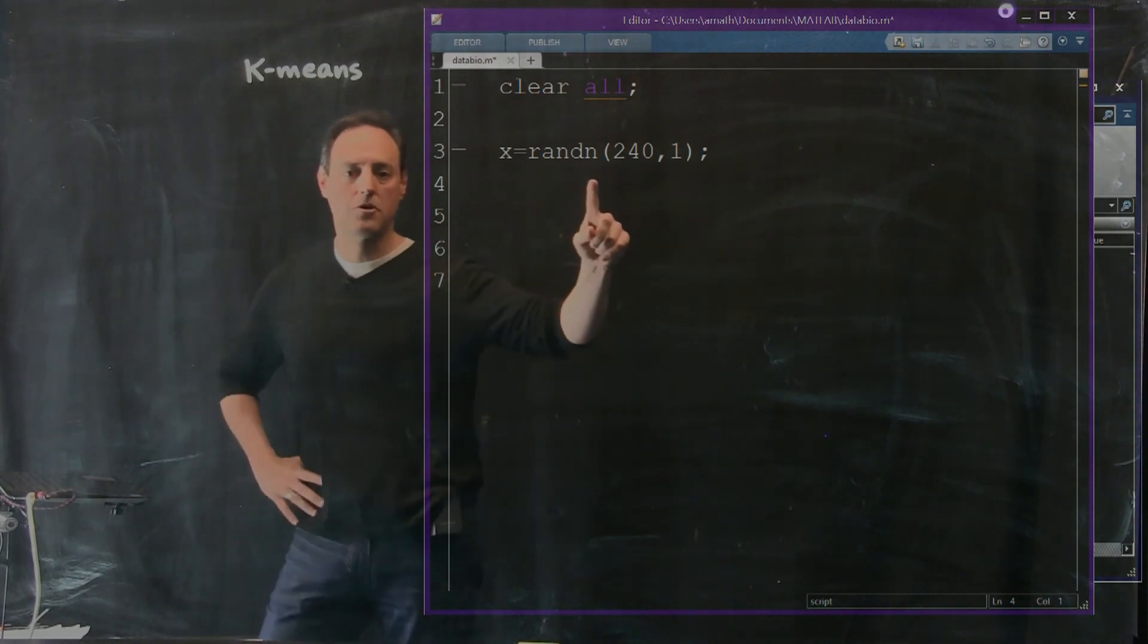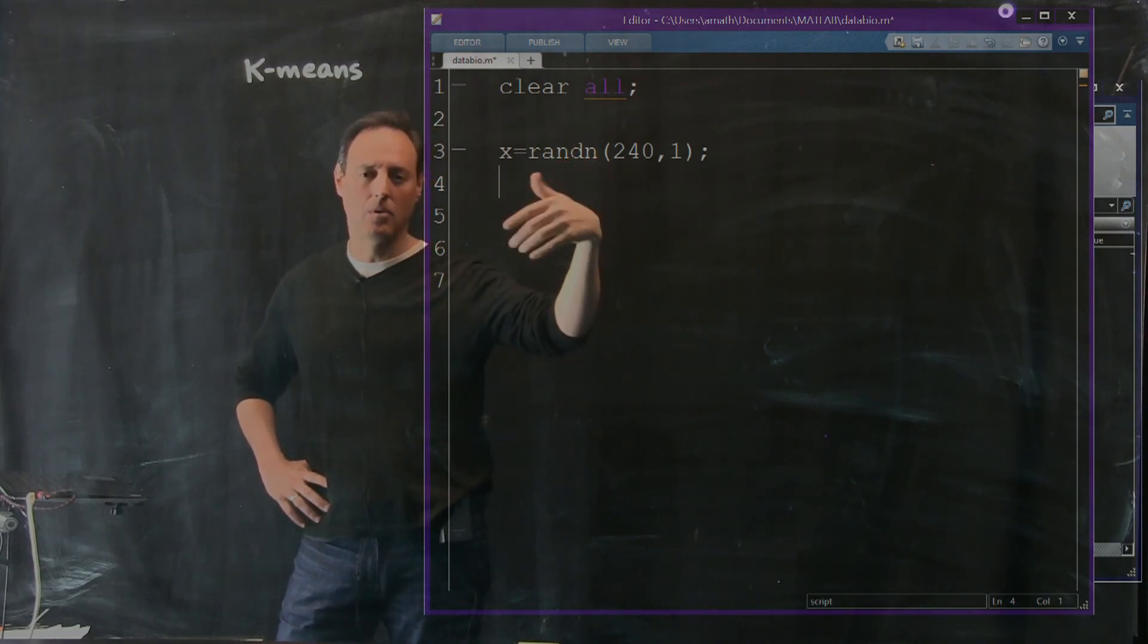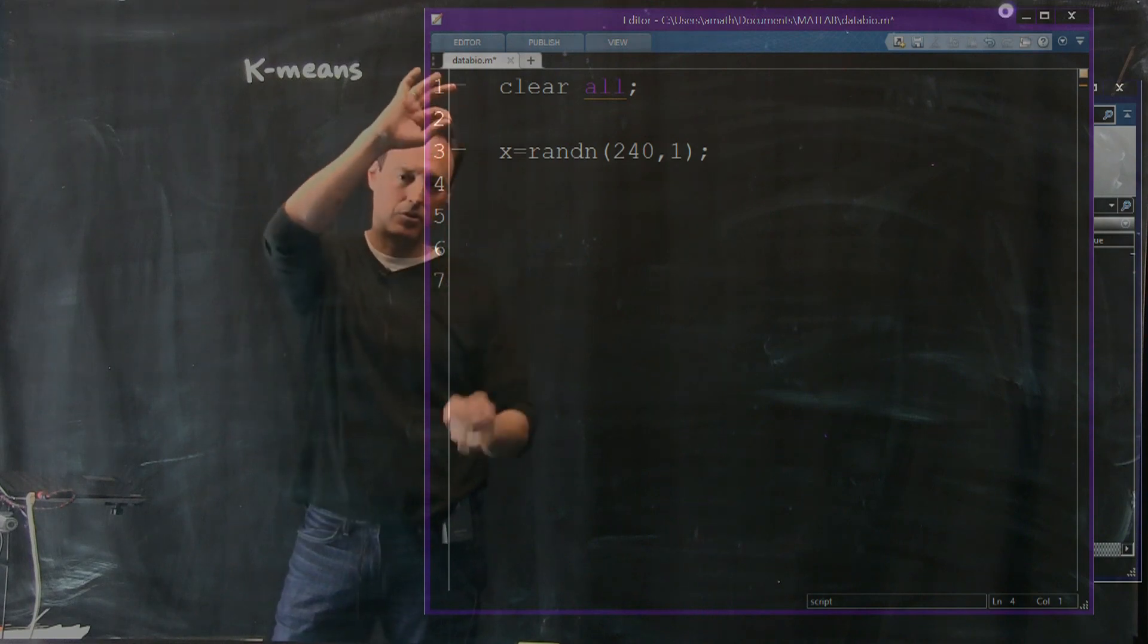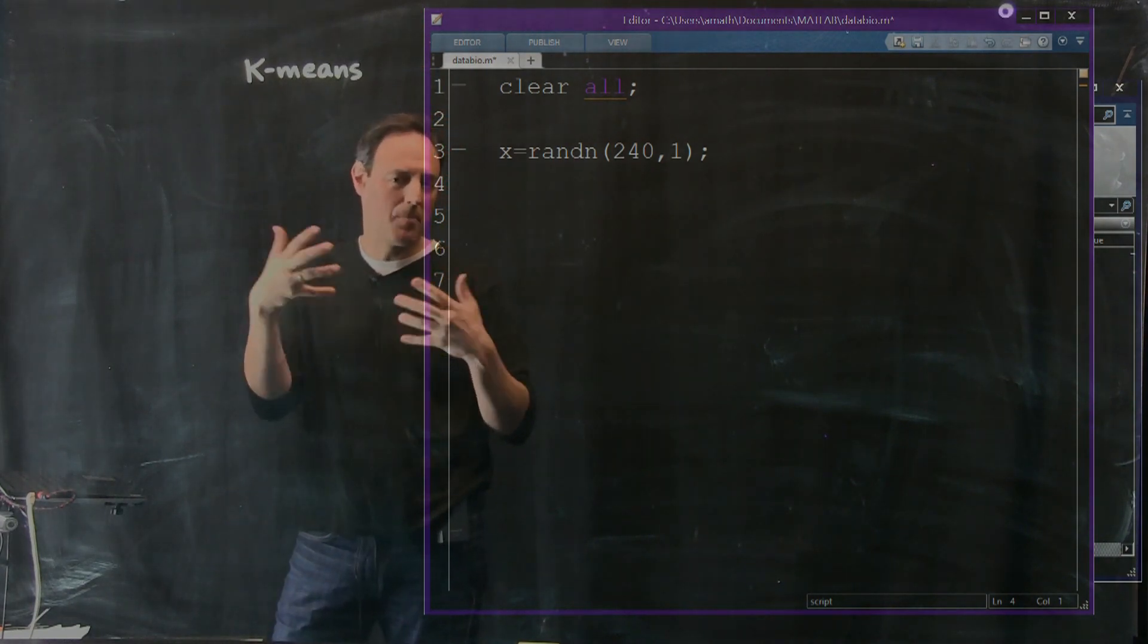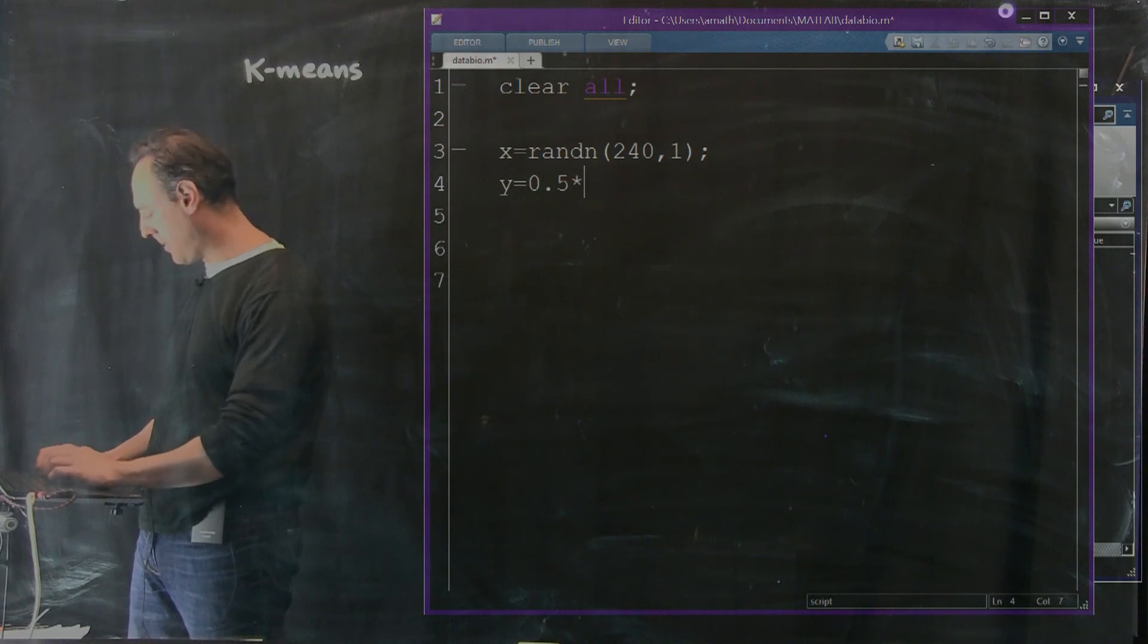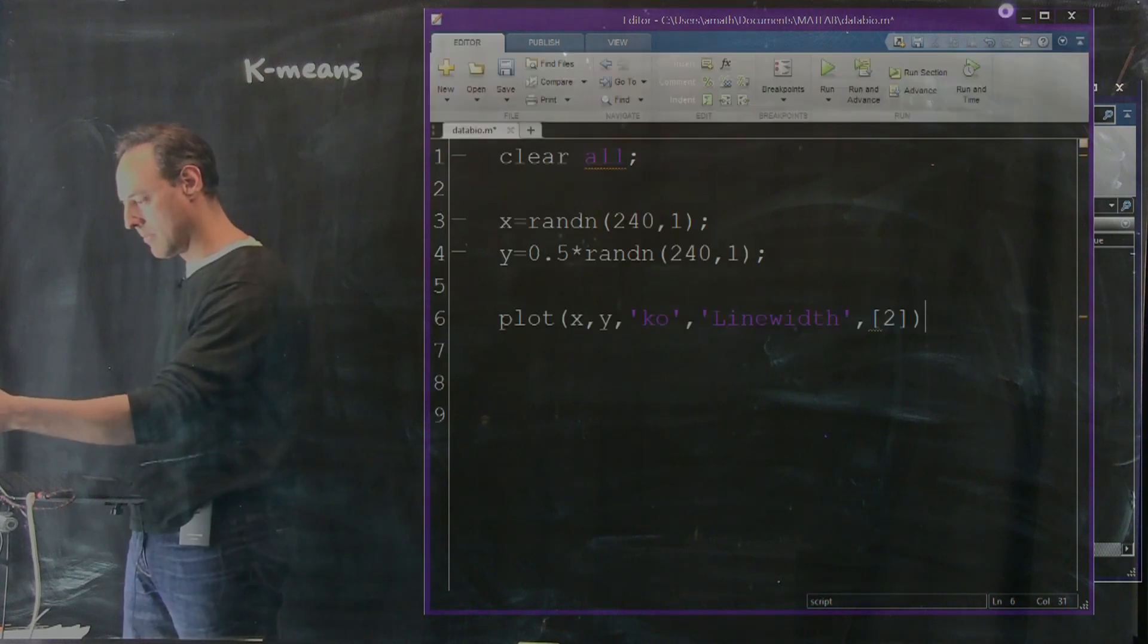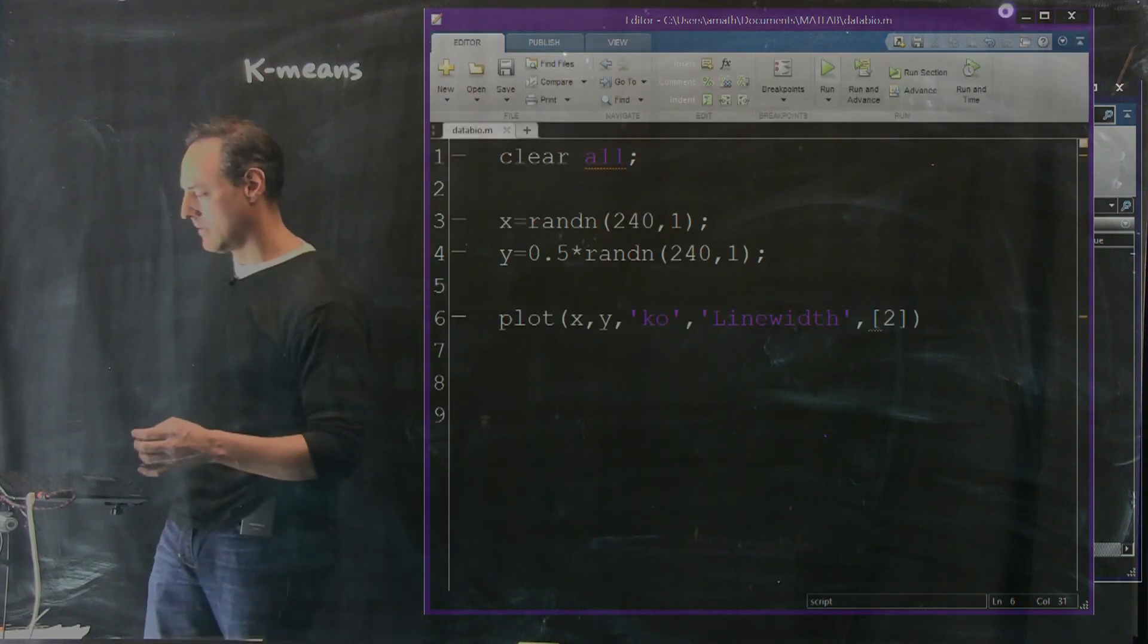I'm going to say x equals randn(240,1). This randn makes basically a Gaussian distributed random variable with mean zero and unit variance. I have 240 points lined up into a vector of 240 rows, one column. Those are my x values. My y values are going to be similar, but I'm going to make it a little bit narrower in the y direction, 0.5 times randn(240,1). I can just say plot(x,y) with black squares, line width 2, to make it a nice little thicker for us.